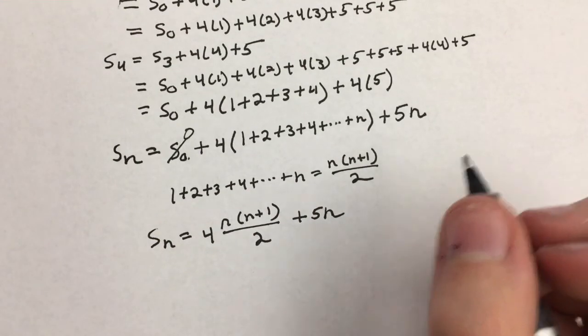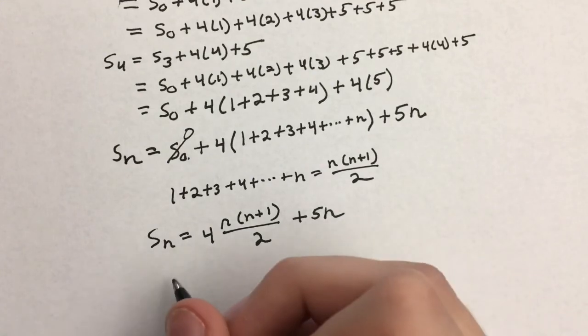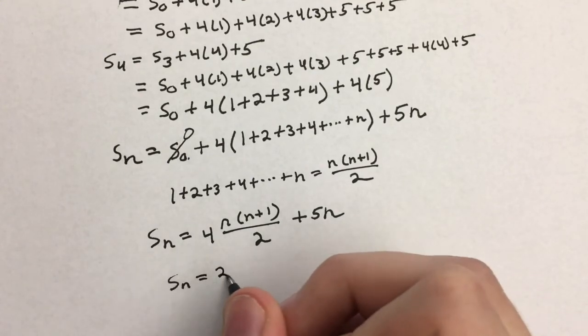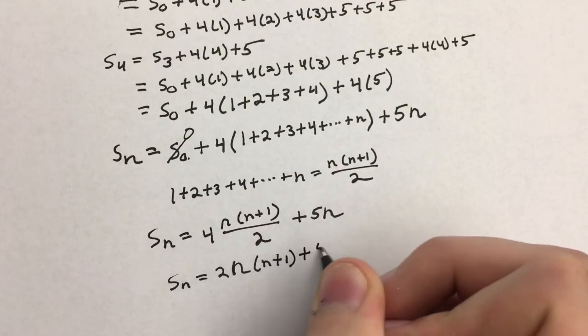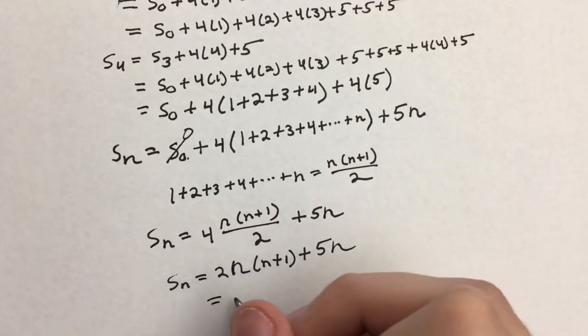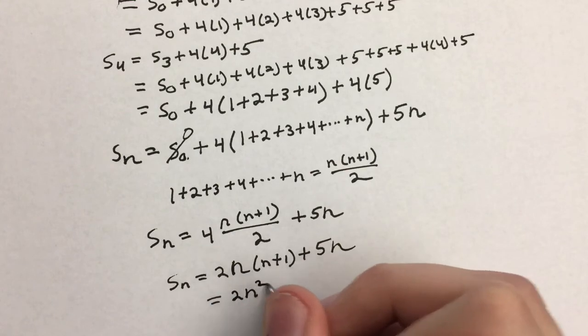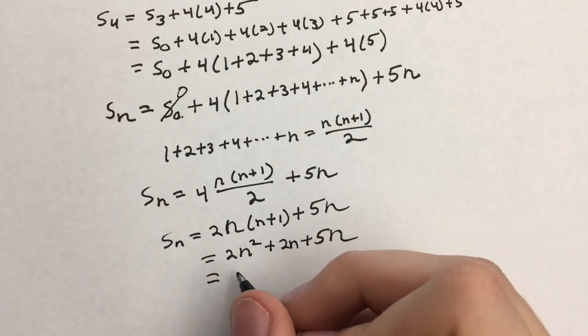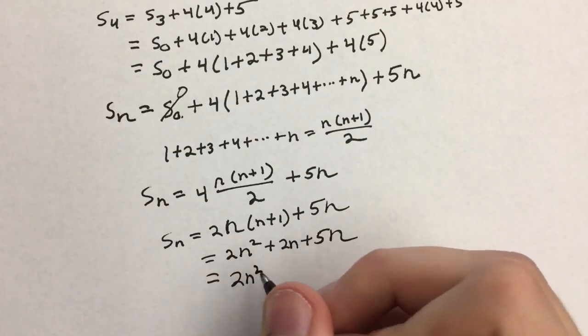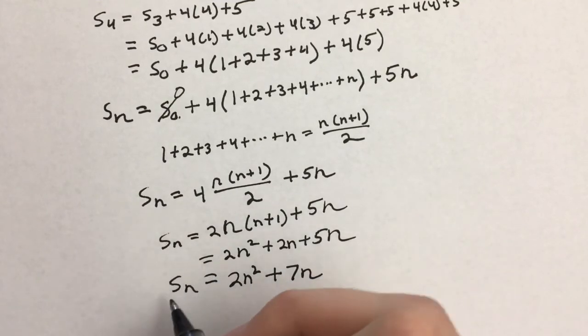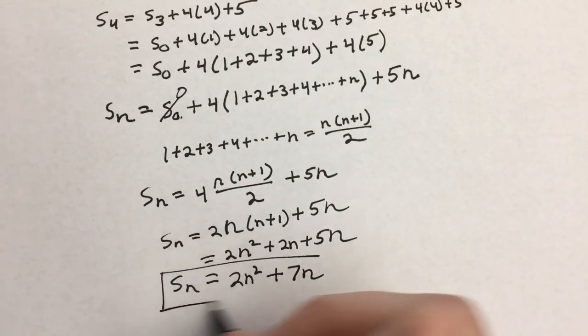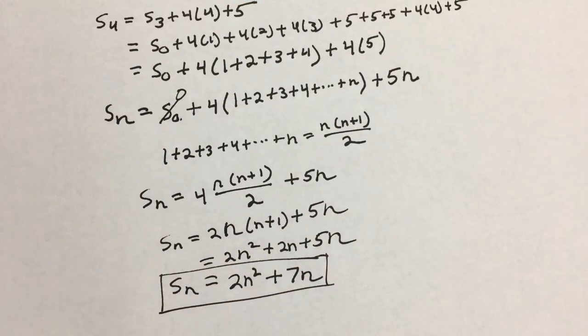And now I'm just going to do some algebra to clean this up a little bit. I'm going to cancel a 2 here. So S sub n equals 2n(n+1) plus 5n. And then I'm just going to do some distribution to see that S sub n equals 2n squared plus 7n.